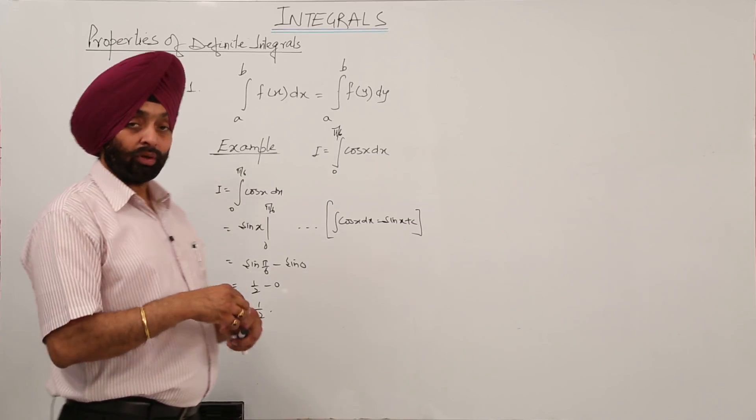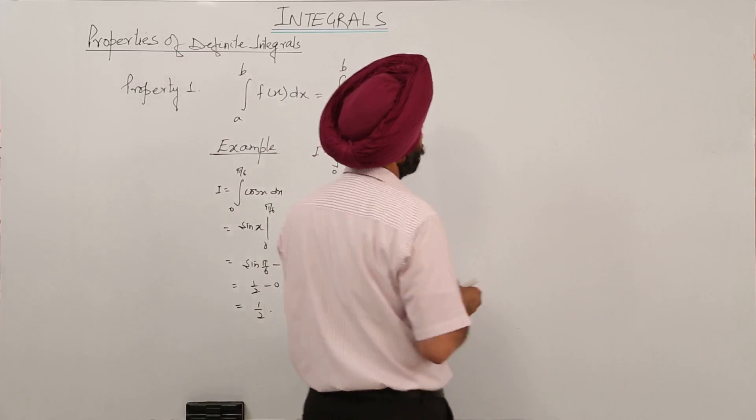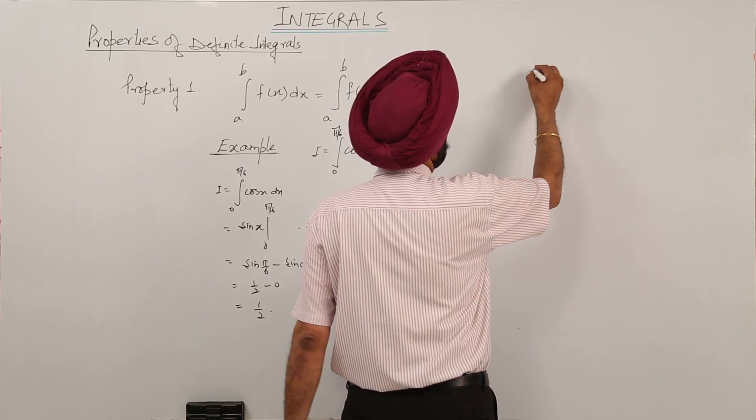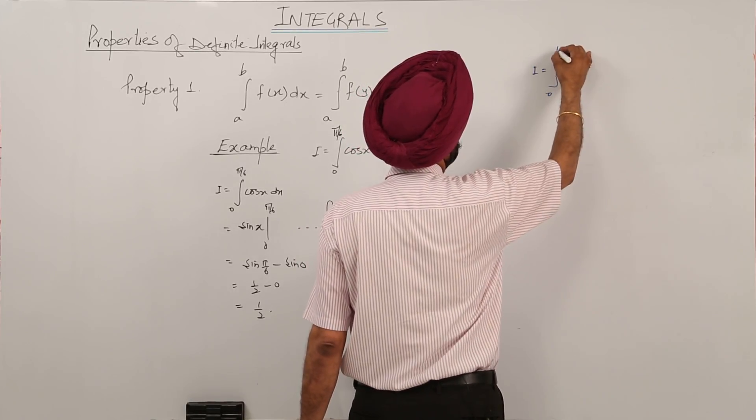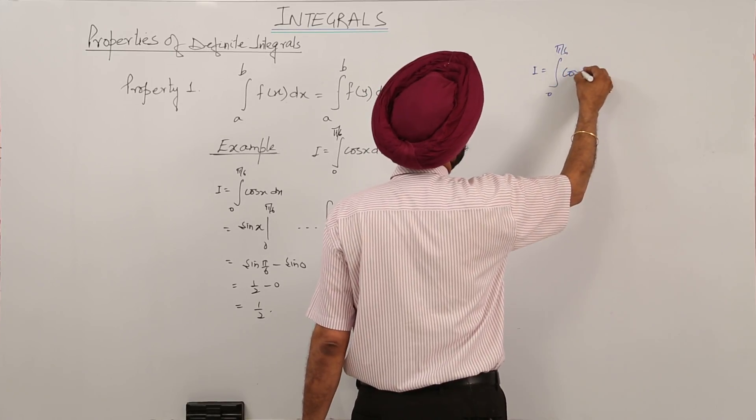Now same question. If we are going for the substitution part, what we are writing here now? Integration of 0 to pi by 6 for cos x dx.